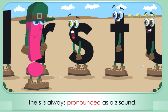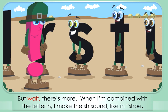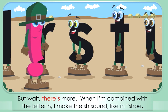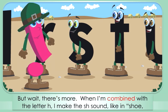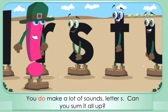Anytime an ES is added to make a plural word, like boxes for example, the S is always pronounced as a Z sound. You're a pretty complicated letter, aren't you S? But wait, there's more — when I'm combined with the letter H, I make the SH sound, like in shoe, shave, and shower.